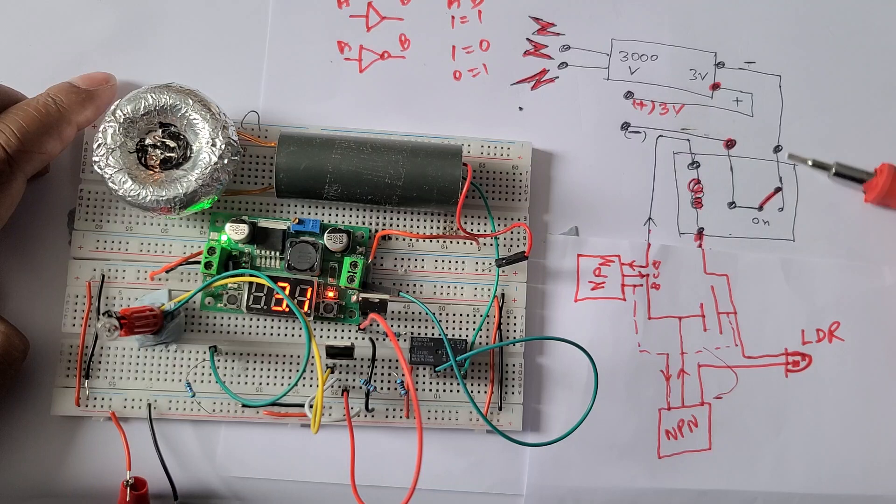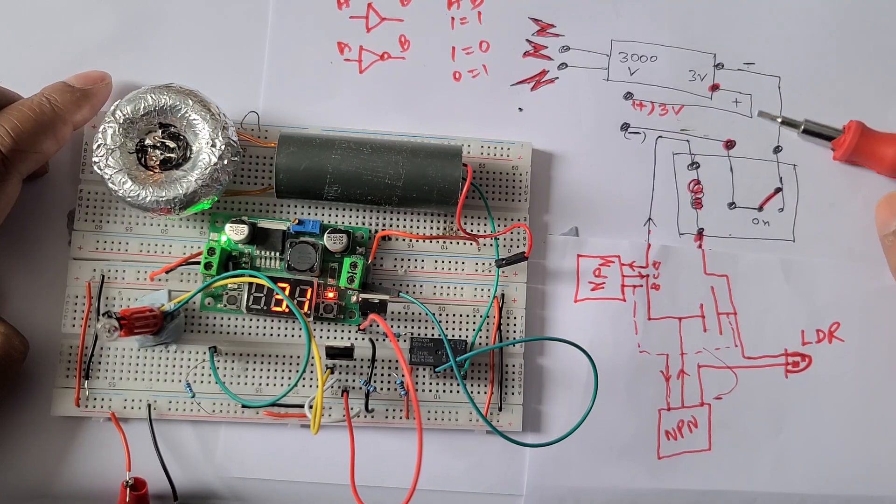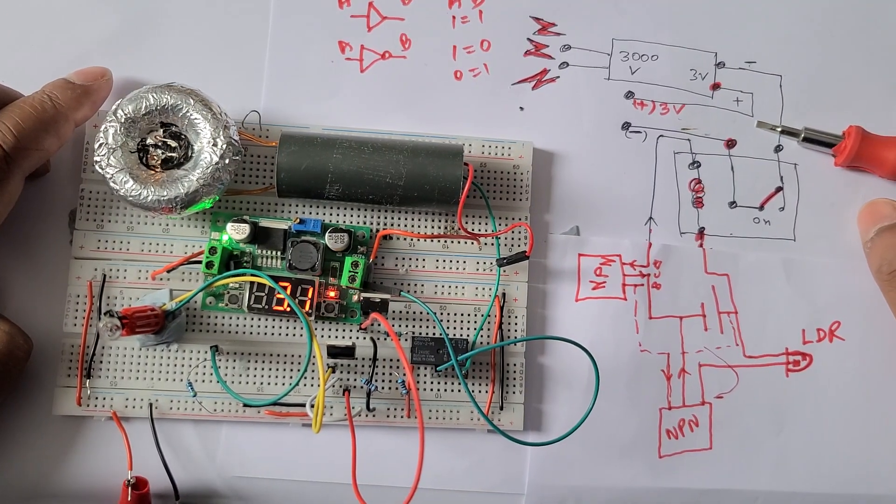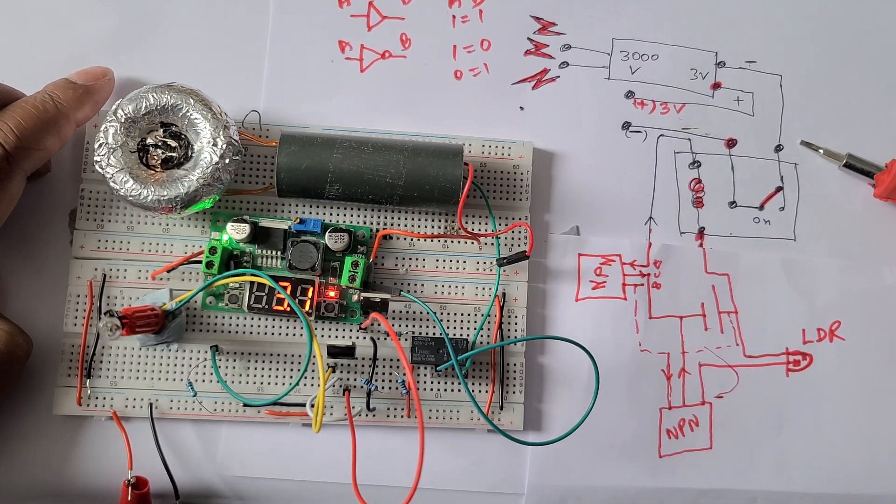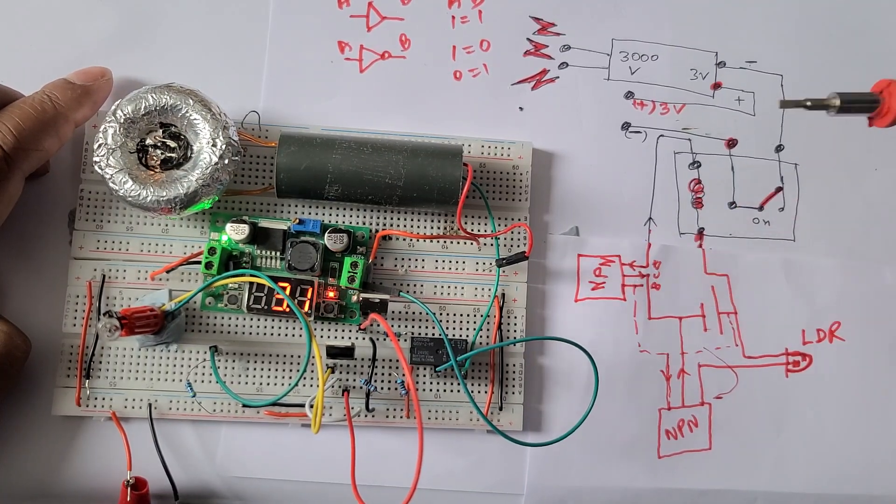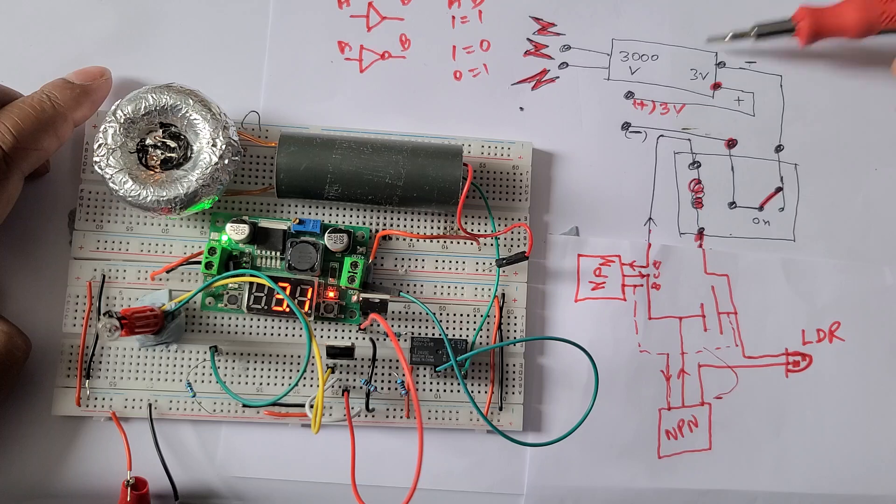The amount of current required for this resonator circuit is not possible to provide directly by the MOSFET. That's why I have used MOSFET to turn on the relay and the relay turns on the resonator circuit.